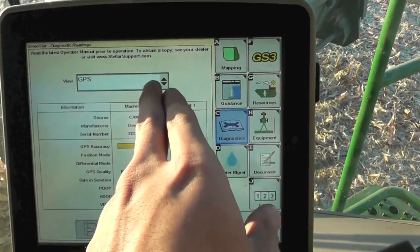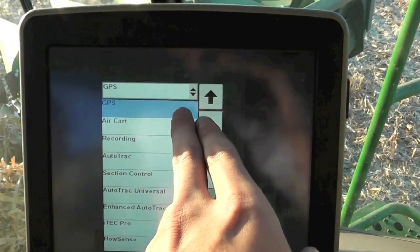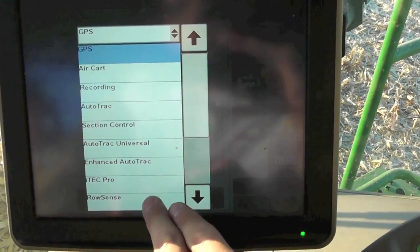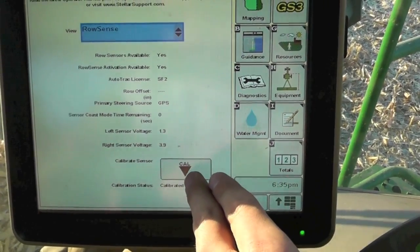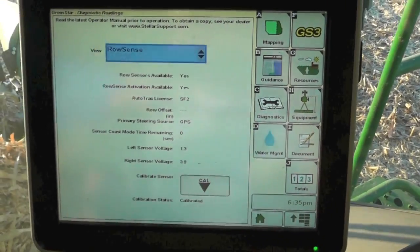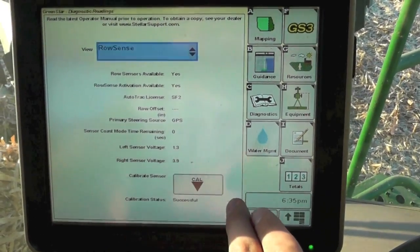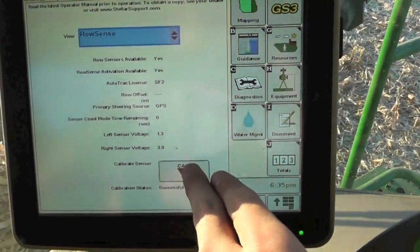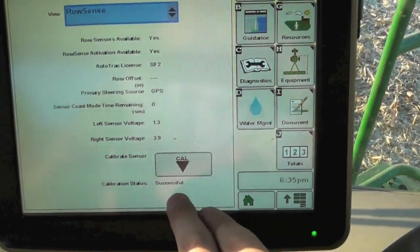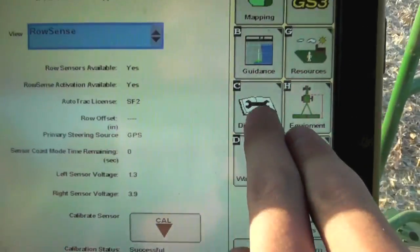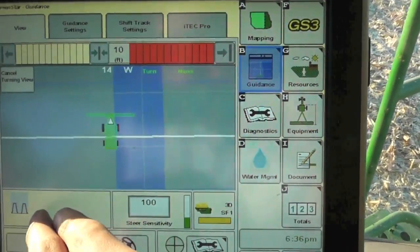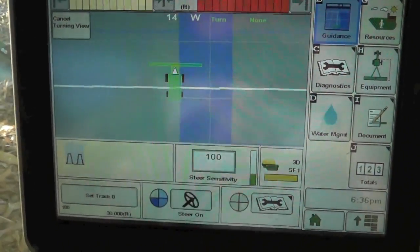We'll go to diagnostics, hit our drop down at the top, and go down and find row sense. You'll see a cal button down here at the bottom. Make sure your sensors aren't touching anything out on the ground, hit calibrate, and it should tell us it is successful down at the bottom and give us voltage readings right there. Go back to our guidance page, we see an icon for our row sense. We're all set to go.